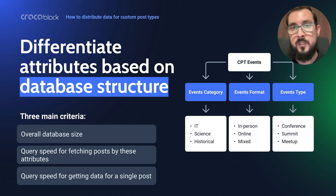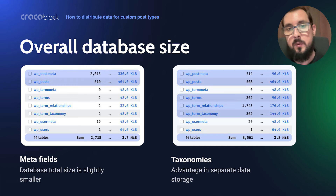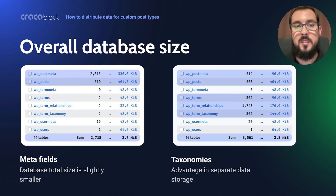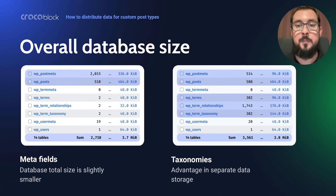We will check the efficiency of storing these properties as taxonomies versus meta fields, comparing them based on three main criteria: overall database size, query speed when retrieving a collection of posts by these properties, and query speed when retrieving data for a single post. I created two test websites, each containing 500 events where each event has one value of each property. The conclusion by the first criteria is that the total size of the database in the case of using meta fields is smaller, but only slightly smaller. On the other hand, in the case of taxonomies there is an advantage in separated data storage — a large amount of data split between more tables, so overall it has less effect on each table's performance.